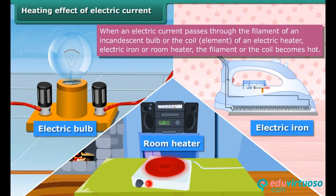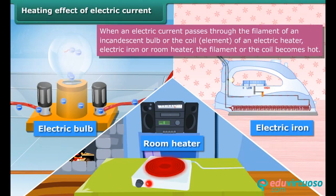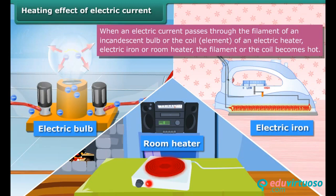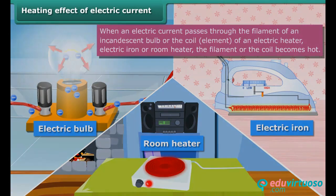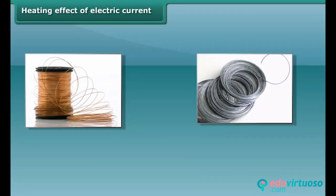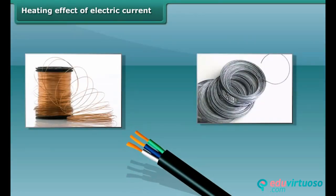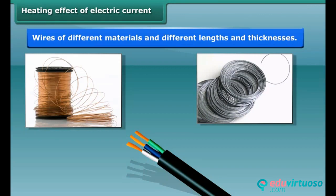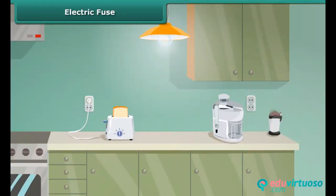When an electric current is passed through a metallic wire — like the filament of a bulb or the coil of an electric heater, geyser, electric iron, or room heater — the coil becomes hot and glowing. This is known as the heating effect of electric current. They radiate heat and light. The amount of heat produced in a wire depends on its material, length, and thickness. Thus, for different requirements, we use wires of different materials and different lengths and thicknesses.